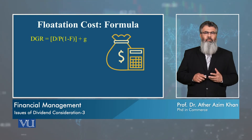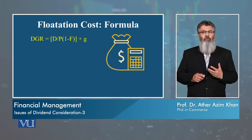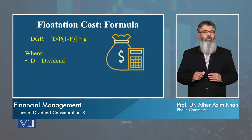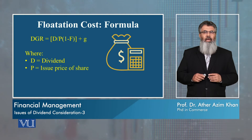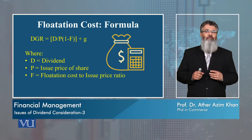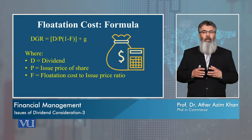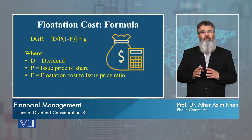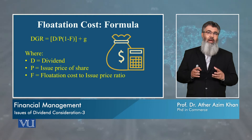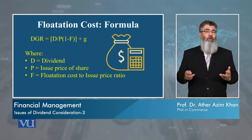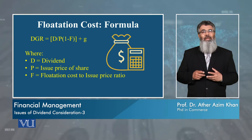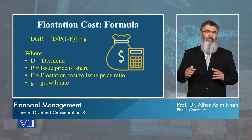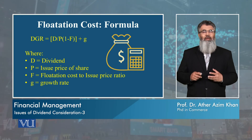Now, this is the formula. If we want to find the cost of new equity considering the dividend growth model, D is the dividend, P is the issue price of the share, and F is the flotation cost of the share issue expressed as a ratio. If the flotation cost percentage is higher, it will certainly have an impact; if it is zero, the impact changes. Small g is the growth rate, which we have discussed earlier in detail.